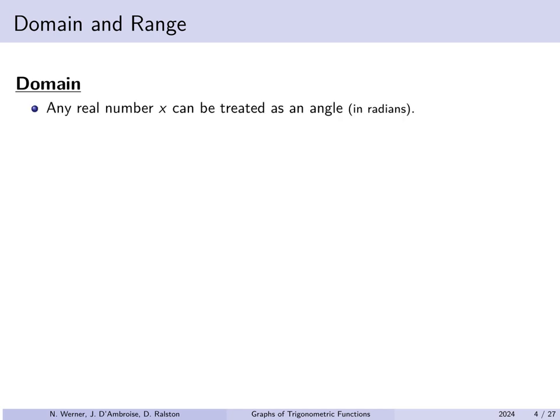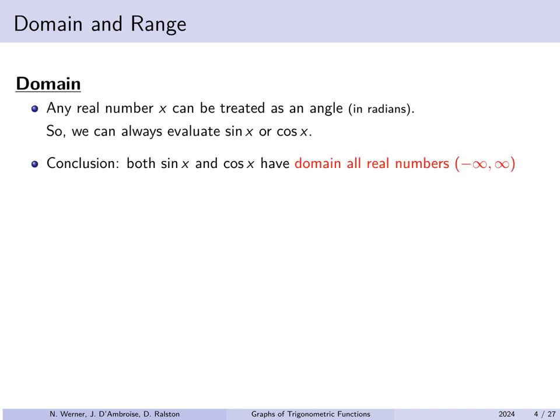For f(x) = sin(x), y corresponds to the vertical coordinate of a point on the unit circle. But for f(x) = -2cos(3x), you're fundamentally working with the horizontal coordinate of a point on the unit circle, even if you're graphing it as y = f(x). Now any real number x could be treated as an angle — radians are dimensionless or unitless, it's just a number. So you can always evaluate the sine or cosine of any real number x. Both sine and cosine have domain equal to all real numbers.